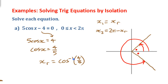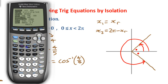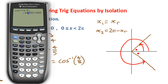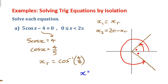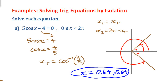Since this value is not one of the special triangles or unit circle values, we need the calculator. Make sure it's in radian mode, then find the reference angle: cosine inverse of 4 fifths. That gives us our reference angle, which is also the first angle since we're in quadrant 1. The second angle is 2 pi minus that value. So we get 0.64 and 5.64 — those are the two solutions, approximate to two decimal places.